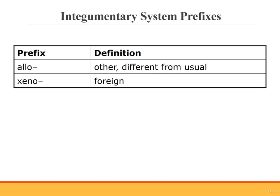We also have two new integumentary system prefixes. Allo, referring to other or different from usual. An example of a medical term using the prefix allo is allograft, which is a skin graft taken from one person and given to another. And xeno, meaning foreign.